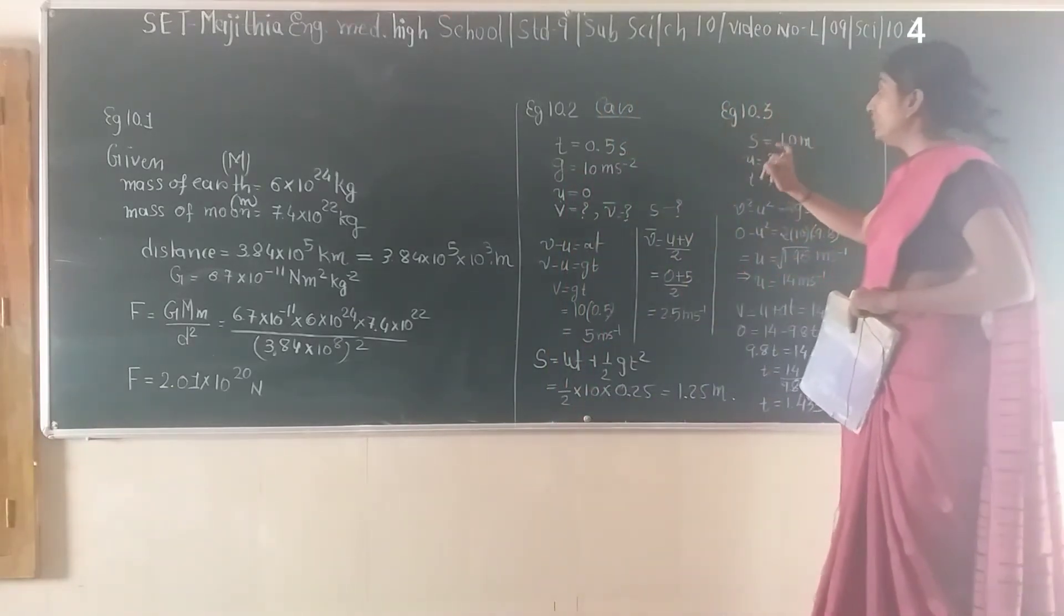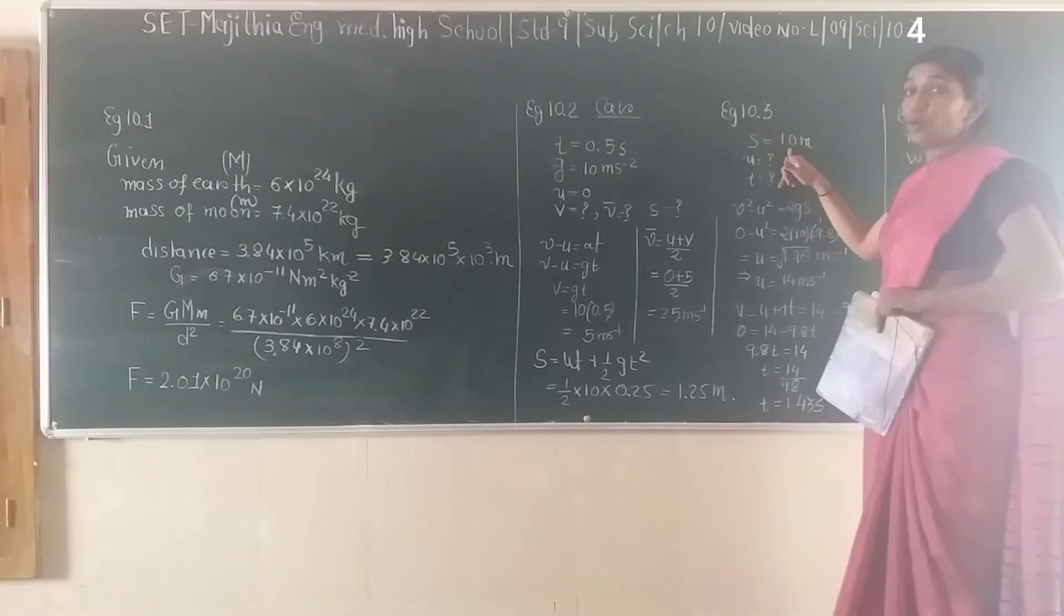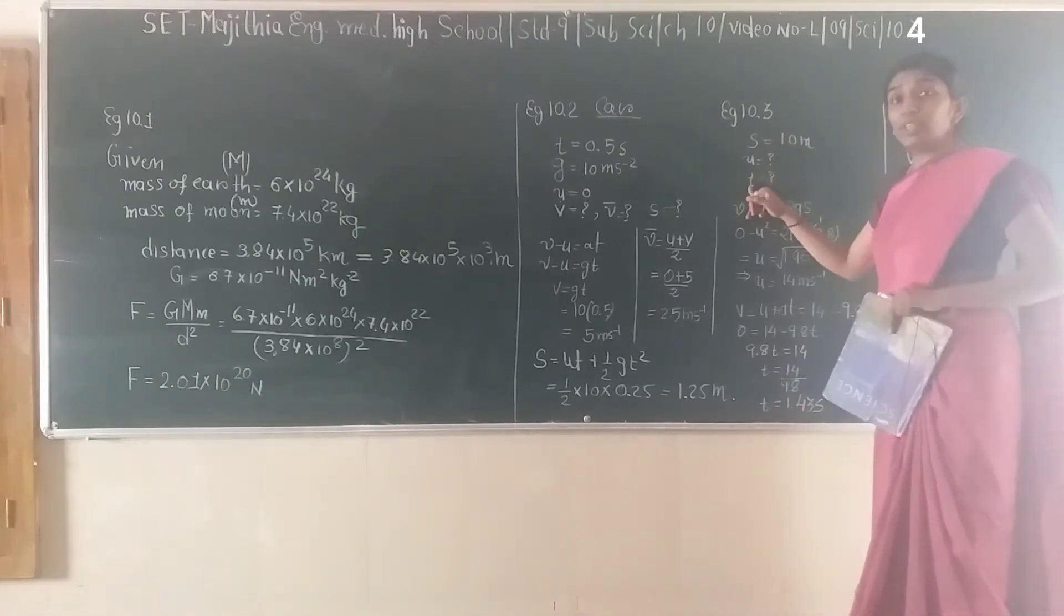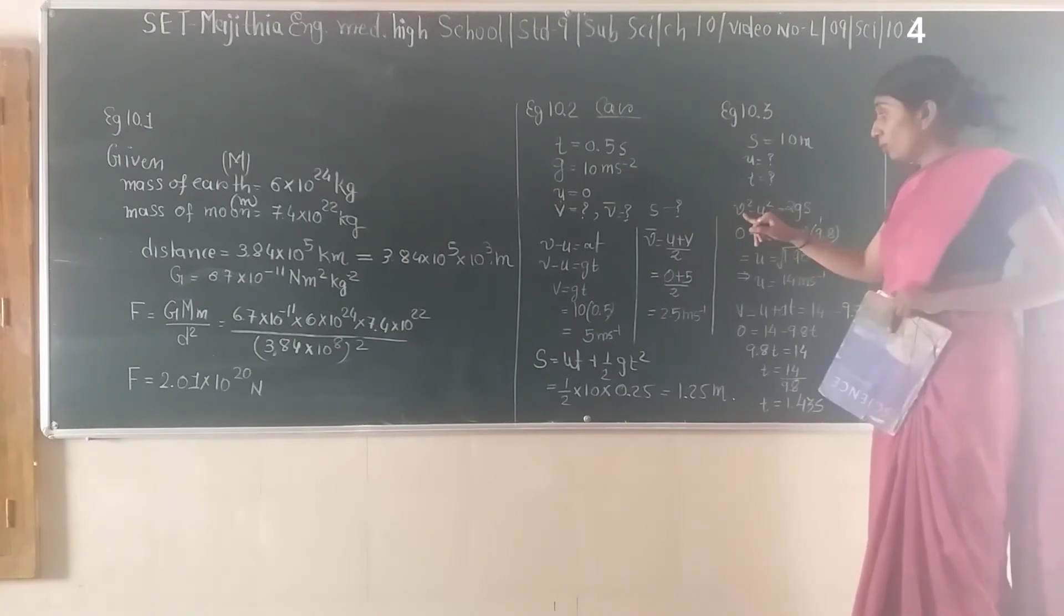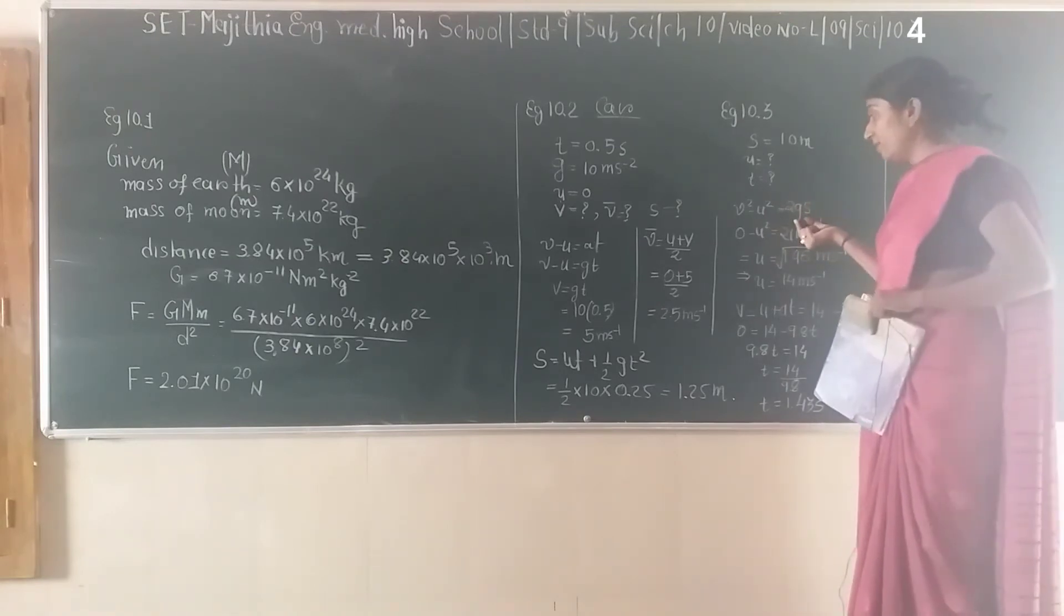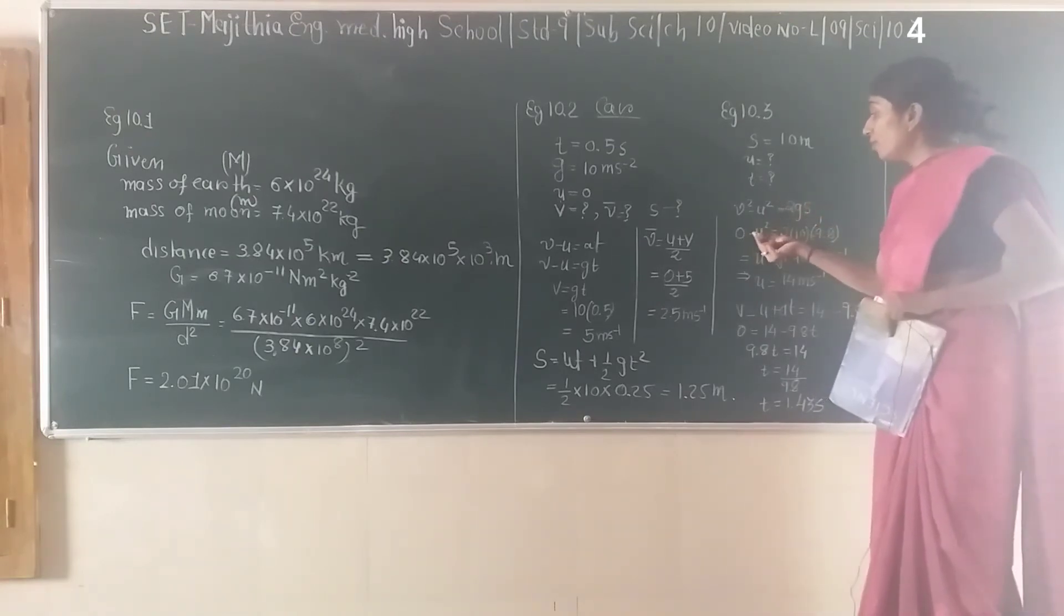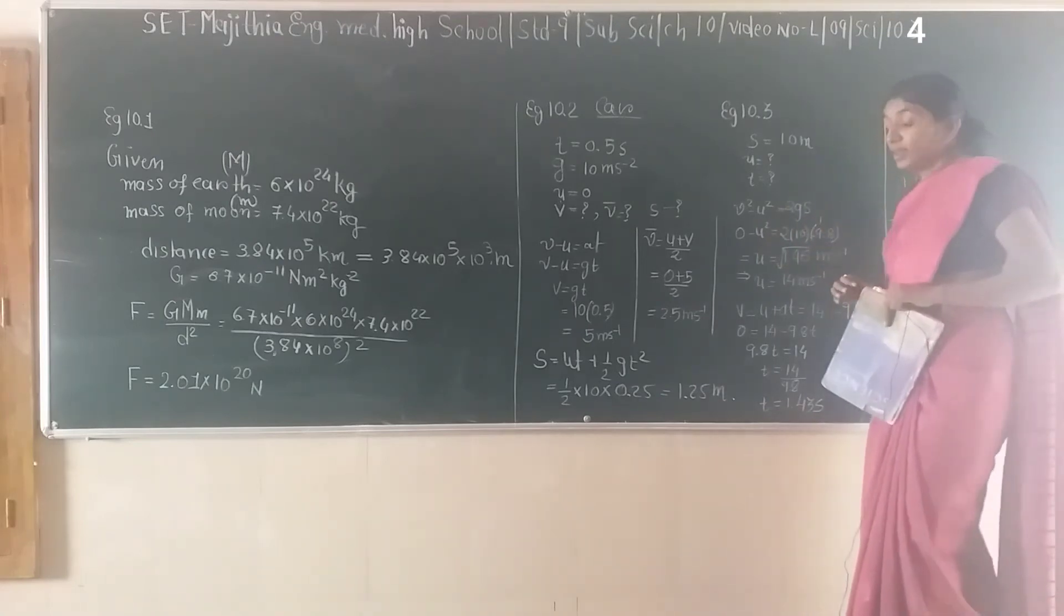Example 10.3: distance to cover is 10 meters, we need to calculate u (initial velocity) and time taken to reach the highest point. Using Newton's third equation of motion: v² - u² = 2as. We simply replace a by g, the gravitational acceleration. So v² - u² = 2gs.